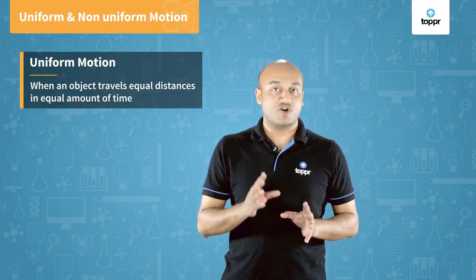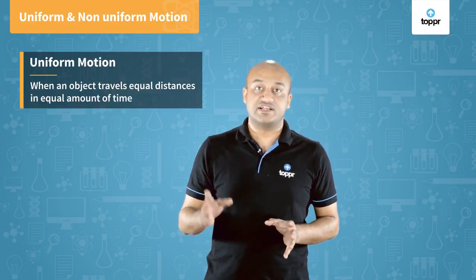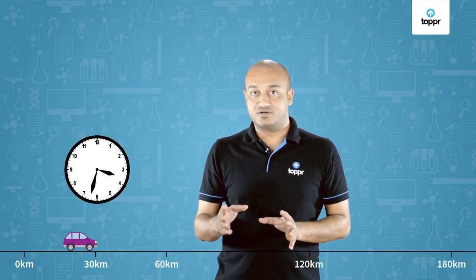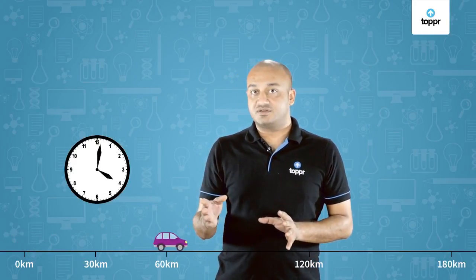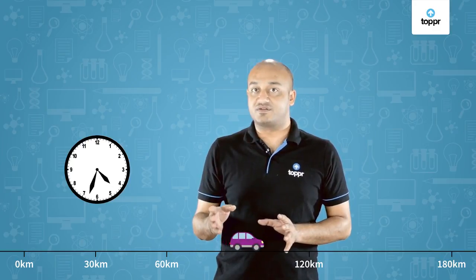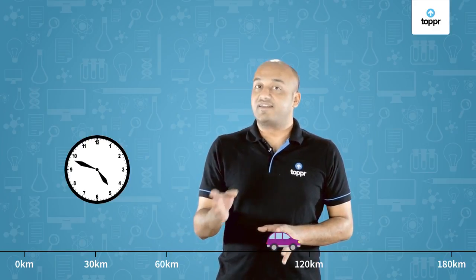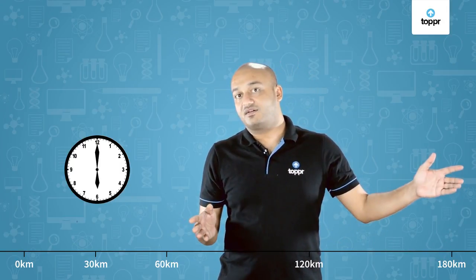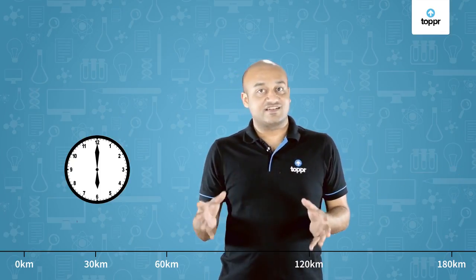Uniform motion is when an object travels equal distances in equal amounts of time. Let's look at this car. You can see that this car is moving forward — in the first hour it covers 60 kilometers, in the second hour it adds another 60 kilometers, in the third hour again it adds 60 kilometers and so on. So this is an example of uniform motion.